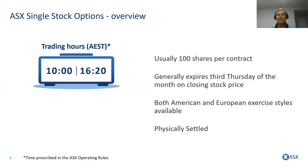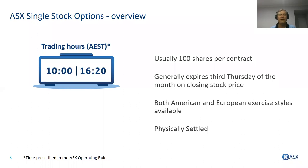We have both American and European style options in the single stock market. For selling a call option, with American style you're obligated to deliver those shares on any day up until expiry; with European style, only on the expiry date itself. Sometimes people want to only be obligated on one day, so they choose European style. All single stock options are physically settled — physical shares transfer hands at expiry.